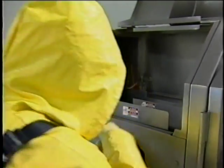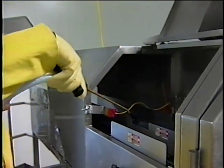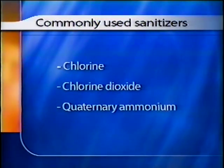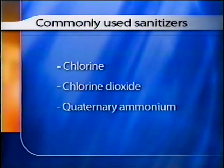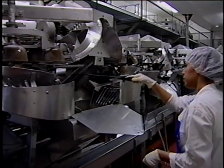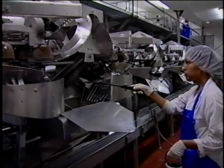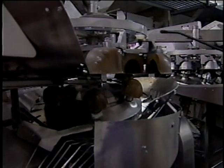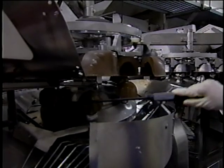Finally, all surfaces should be sanitized with an approved antimicrobial agent. Commonly used sanitizers include chlorine, chlorine dioxide, or quaternary ammonium. It is important that the level of sanitizer used be adequate to kill the targeted microbe, which could be salmonella, listeria, E. coli O157:H7, or any other pathogen.